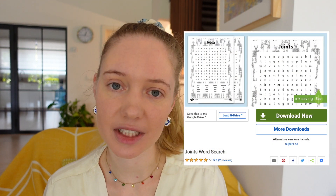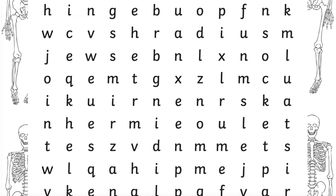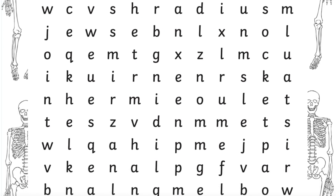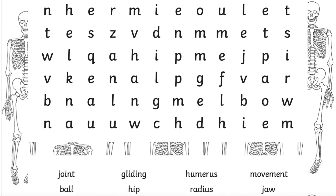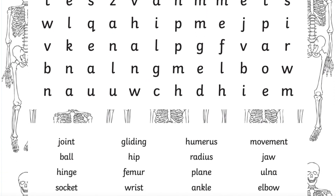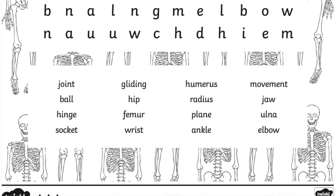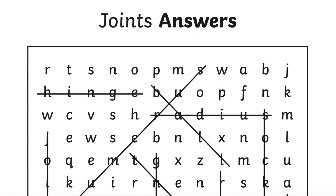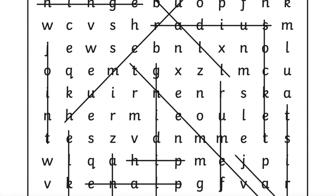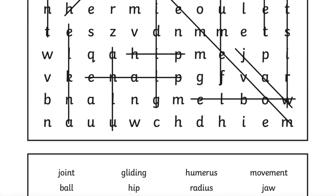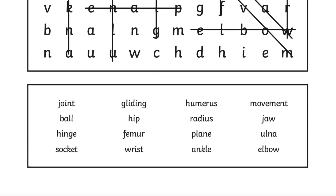Joints are parts of the body where two or more bones meet. The joint enables movement of the bones. Use this resource to reinforce the names of joints, the different parts of the human body where joints can be found, and some of the bones that they connect. It would also be useful as an introduction to the vocabulary that pupils will meet before a lesson on joints.